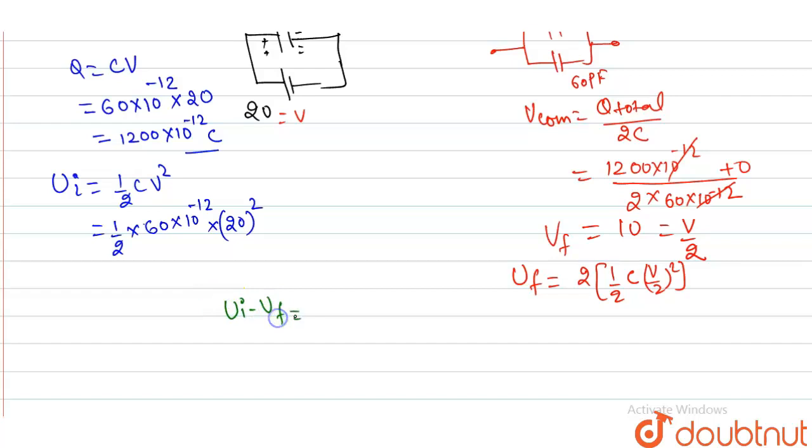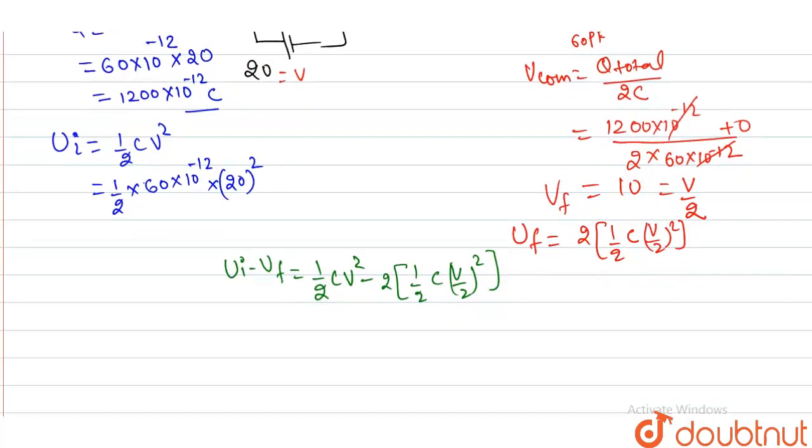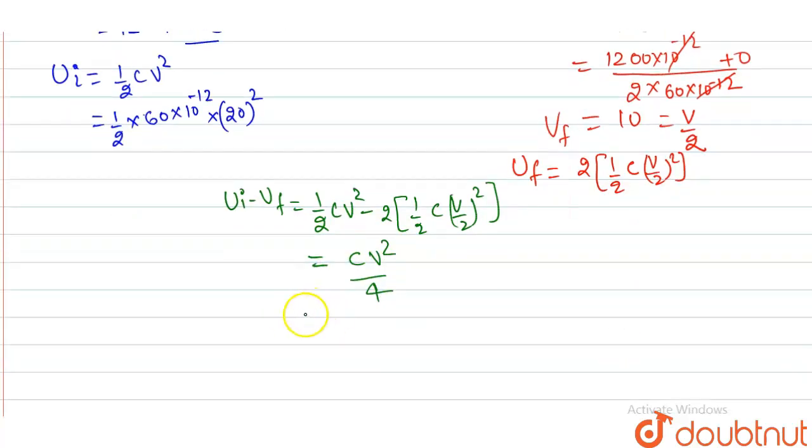energy, that is U initial minus U final. I can write half CV squared minus twice of half C(V/2)². V by 2 because it is 10 volts and V we have taken as 20 volts. If I solve this, we will be getting this is getting cancelled out, that is CV²/4. Now putting all these values,